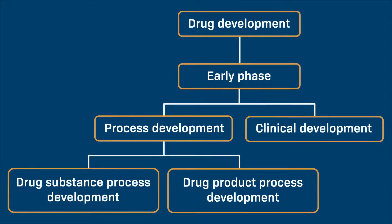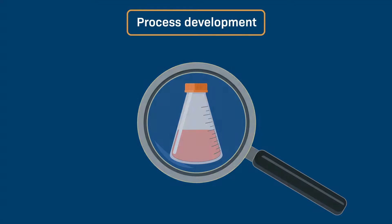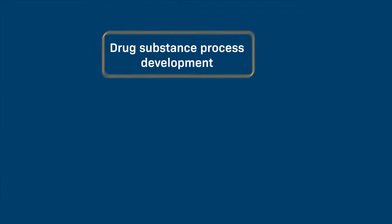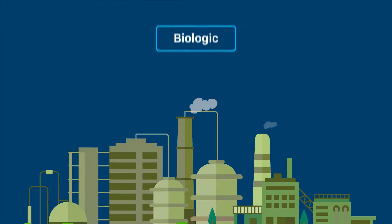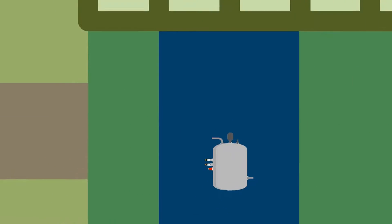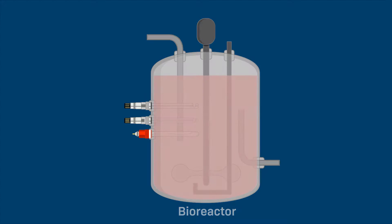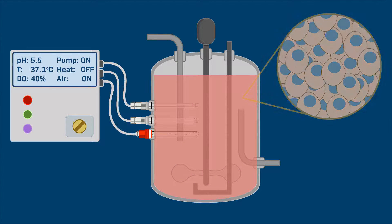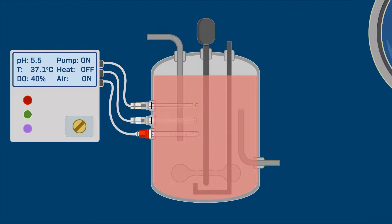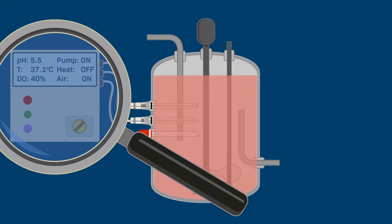Up until this stage, process development is exploratory in nature and is done on a smaller scale. But the goal of drug substance process development is to produce biologics on a very large scale to treat patients. In the next step, the process involves larger, tightly controlled vessels called bioreactors. At this point, all the parameters for optimal cell growth are strictly monitored and controlled. We will investigate how bioreactors work as well as the process controls in bioreactors.